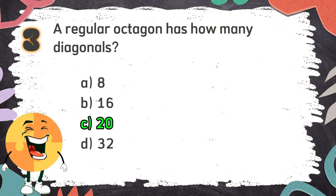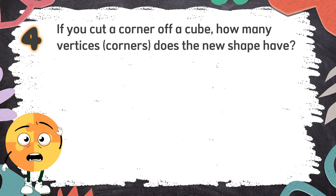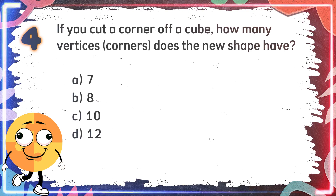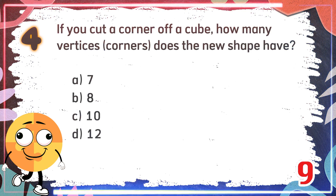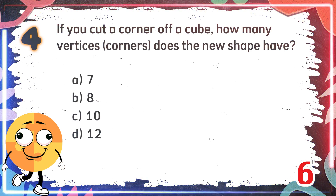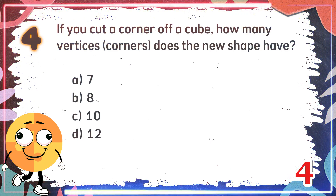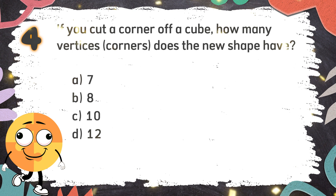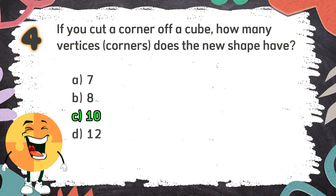Number 4: If you cut a corner off a cube, how many vertices (corners) does the new shape have? The choices are: A. 7, B. 8, C. 10, D. 12. The correct answer is C, 10.